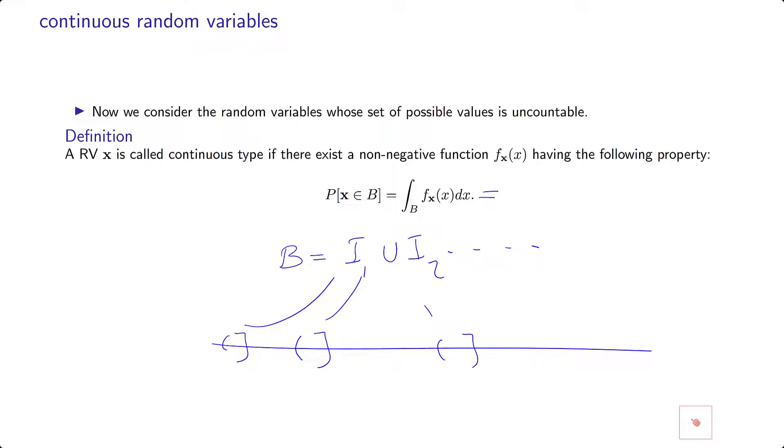In that case, we define this probability as summation over different intervals of integral. Let's say this is a_i and b_i. So it's going to be integral from a_i to b_i of f_x of x dx over different i. So that means the probability in this area plus this area, etc., provided that these intervals are disjoint. This is called Lebesgue integral.